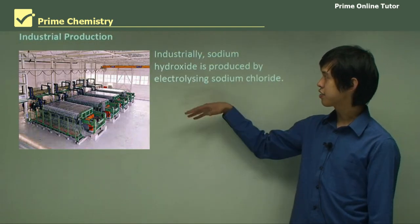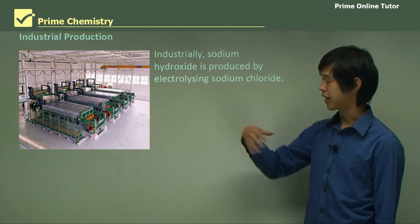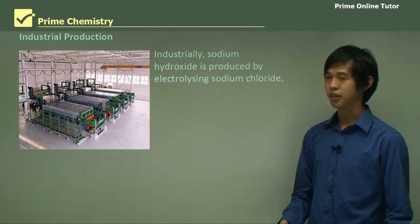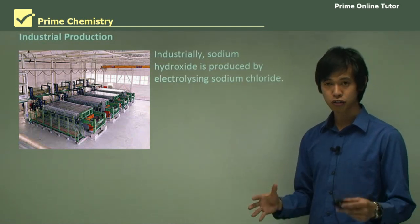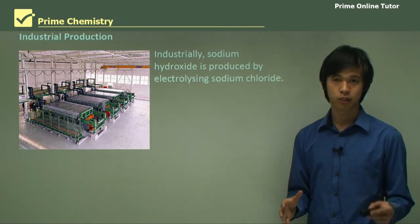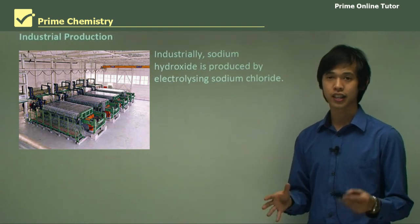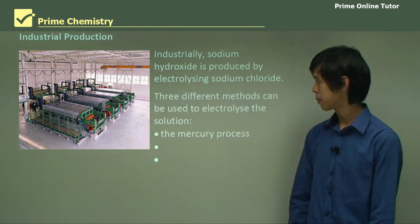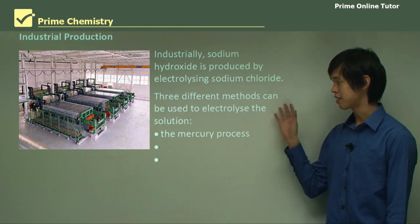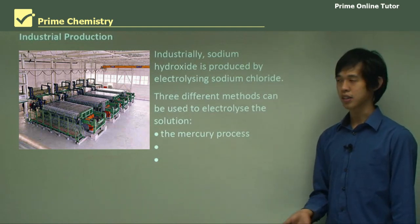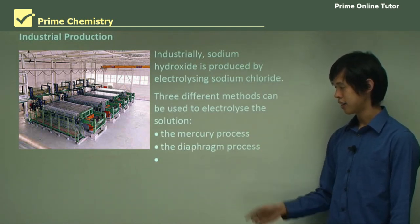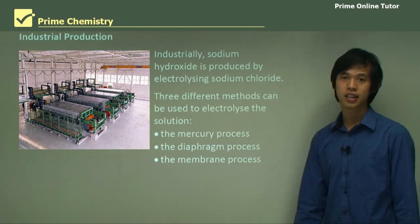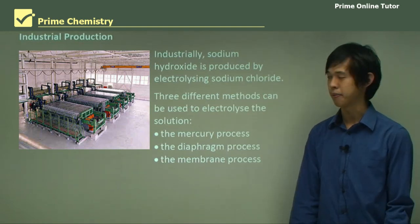Industrially, sodium hydroxide is produced by electrolyzing sodium chloride. We take brine — concentrated sodium chloride solution — and electrolyze it to form sodium hydroxide. Three different methods are used: the mercury process, the diaphragm process, and the membrane process. These are the three we're going to cover today.